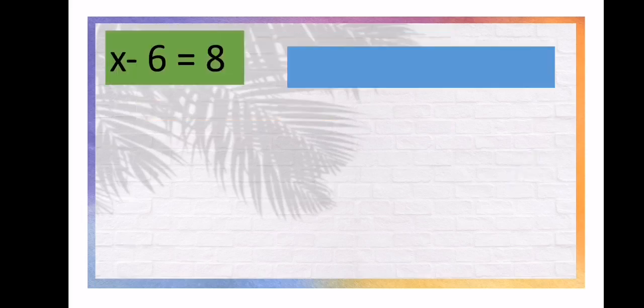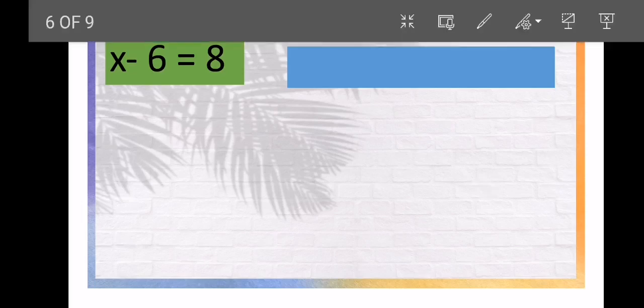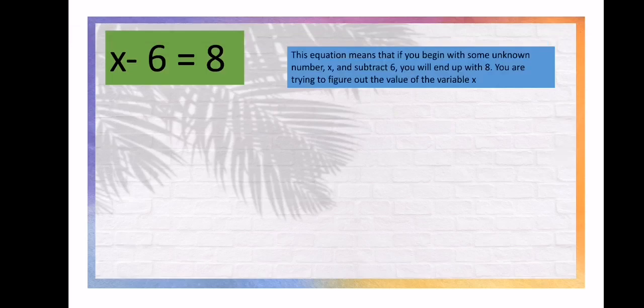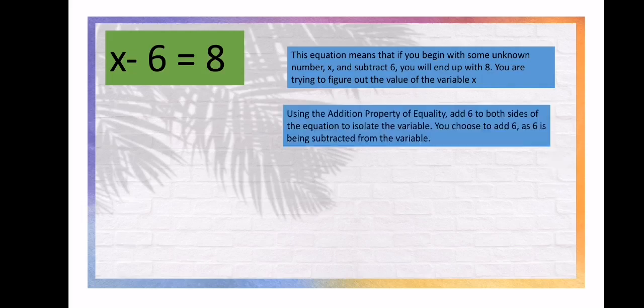Example: X minus 6 equals 8. This equation means that if you begin with some unknown number X, and subtract 6, you will end up with 8. You are trying to figure out the value of the variable X. Using the Addition Property of Equality, add 6 to both sides of the equation to isolate the variable. You choose to add 6 because 6 is being subtracted from the variable.